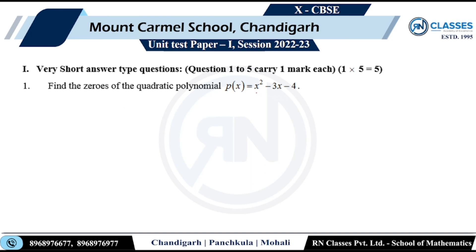Find the zeros of this polynomial. This polynomial can be easily factorized. I can see the factors: x minus 4 into x plus 5. You can easily split the middle term. So zeros are 4 and minus 5.